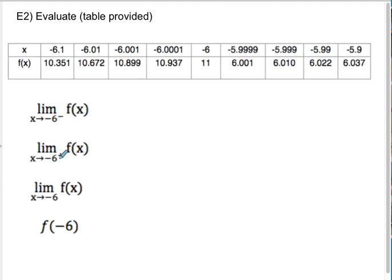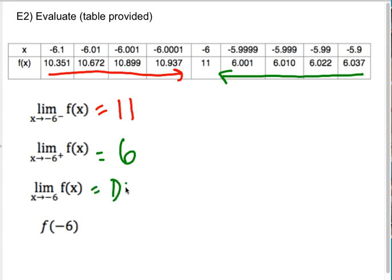Alright, on this table, again same thing, but for negative 6. So as my numbers come from the left, it looks like I'm getting closer and closer to 11. 10.3 something, 10.6 something, 10.8 something, 10.9 something. Looks like I'm approaching 11. When we come from the right, it looks like I'm approaching 6. Because these numbers are getting closer and closer to 6: 6.03, 6.02, 6.01, 6.001. So it looks like I'm approaching 6, which means that the double-sided limit does not exist, but the actual function value is totally 11.